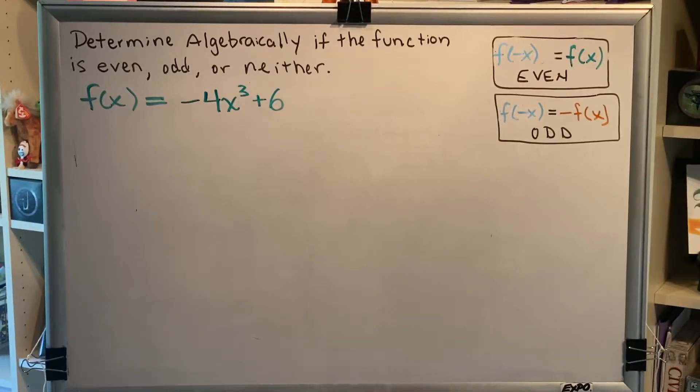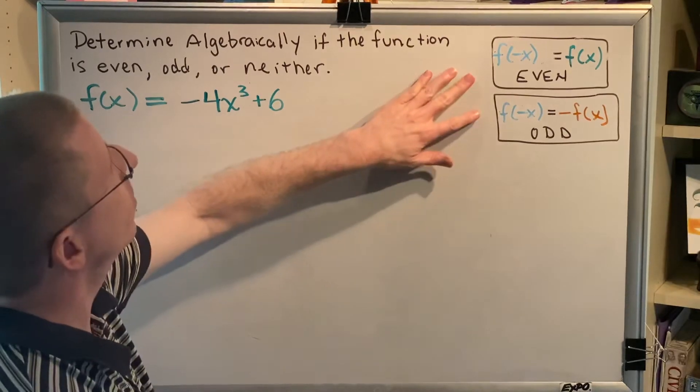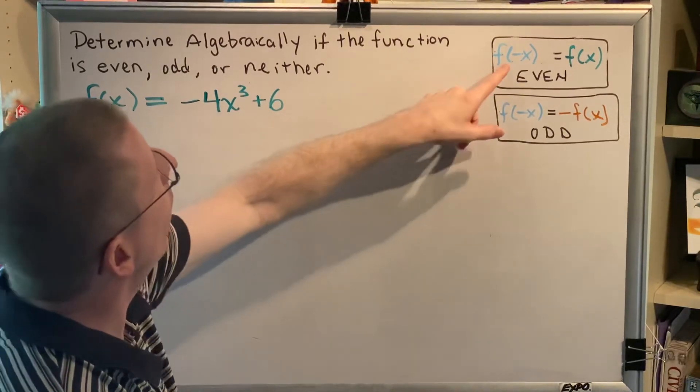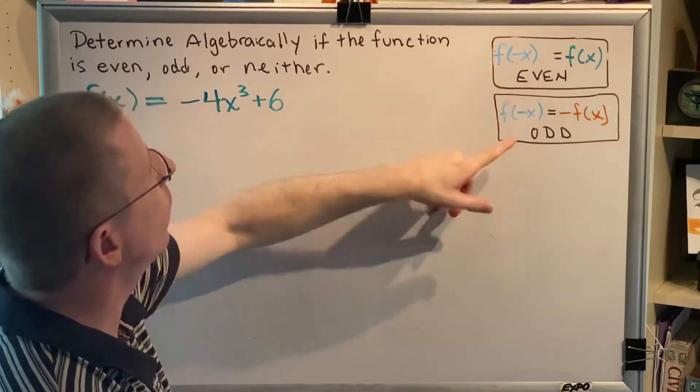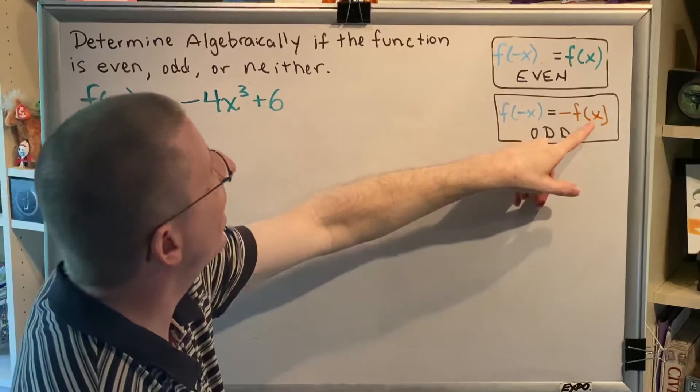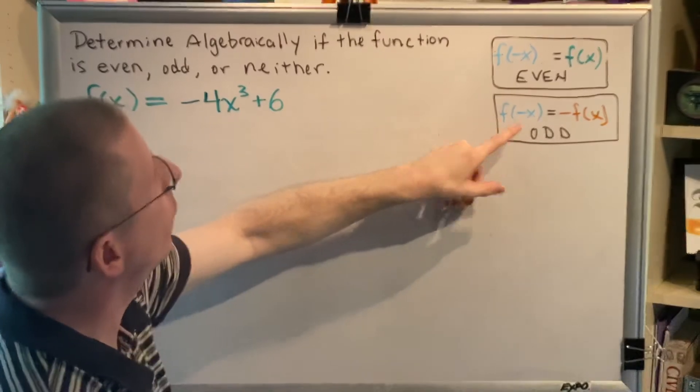The topic of this video is determining algebraically if a function is even, odd, or neither. Let's look at a problem. So I have the shortcut versions of the definitions here. If f of negative x equals f of x, we're dealing with an even function. If f of negative x equals negative f of x, we're dealing with an odd function.